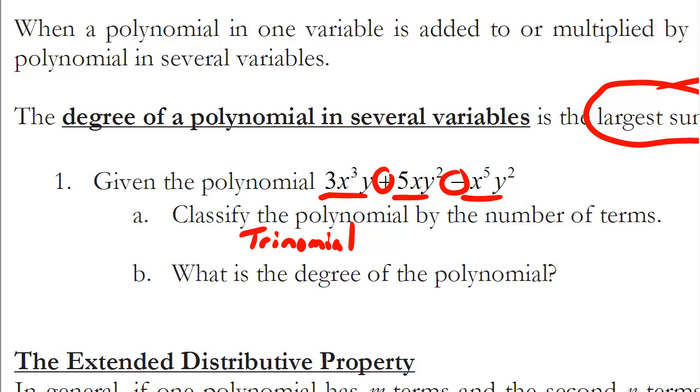Part b says, what is the degree of that trinomial? Well, the degree is the sum of the exponents for all of the variables in any one term. If I look at just this term, the sum there is four. If I look at this term right here, the sum there is three. And over here, five plus two, the sum is seven. Therefore, the degree of this polynomial would be seven.